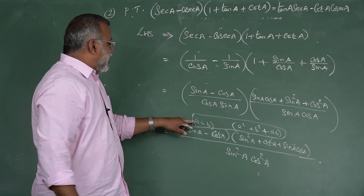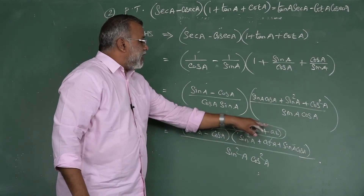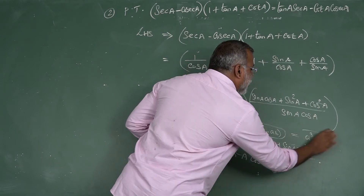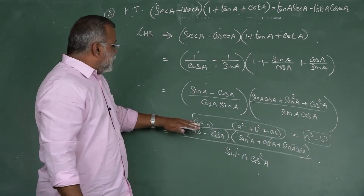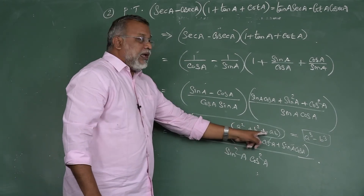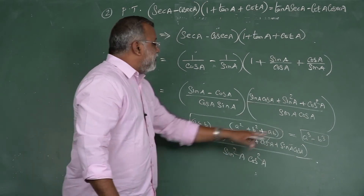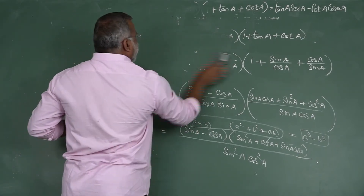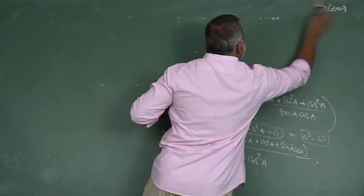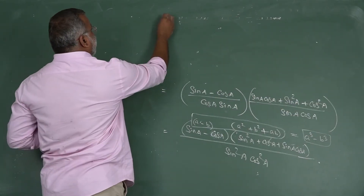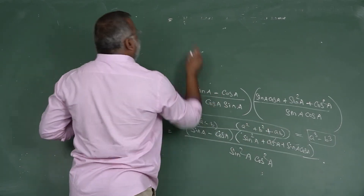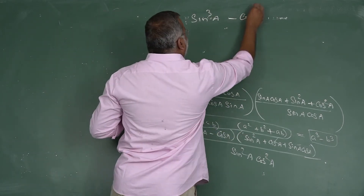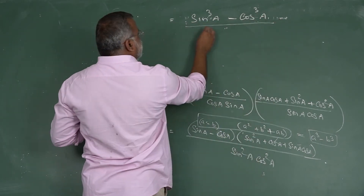Using the algebraic identity: (A - B)(A² + B² + AB) = A³ - B³. So the numerator (sin A - cos A)(sin²A + cos²A + sin A cos A) = sin³A - cos³A. The denominator is sin²A · cos²A.